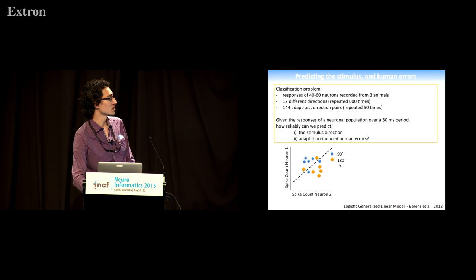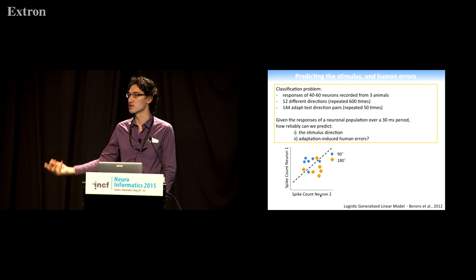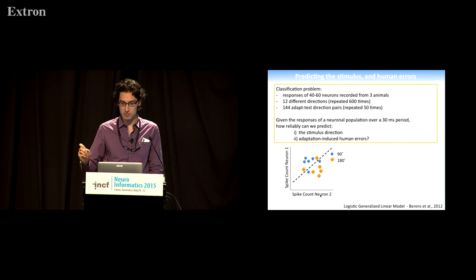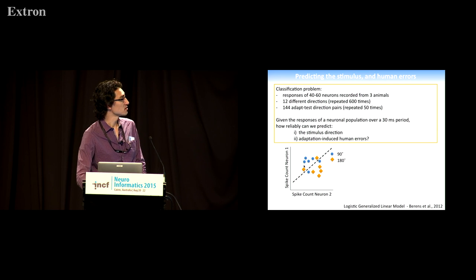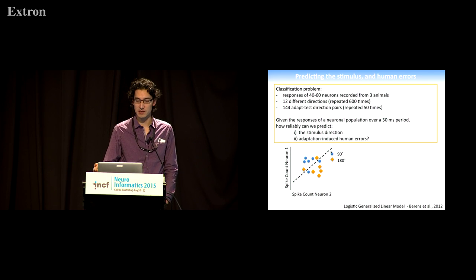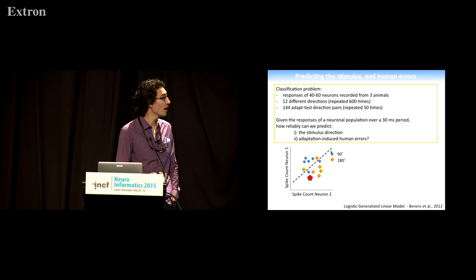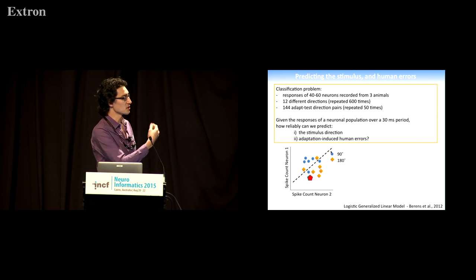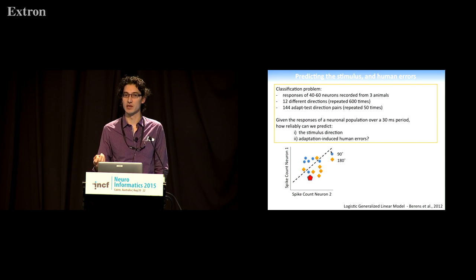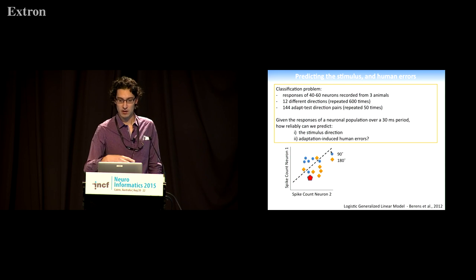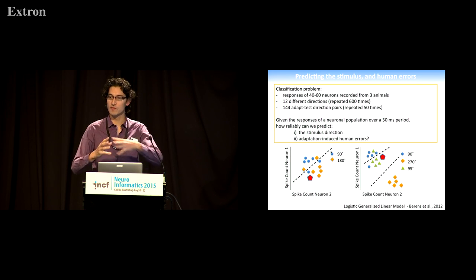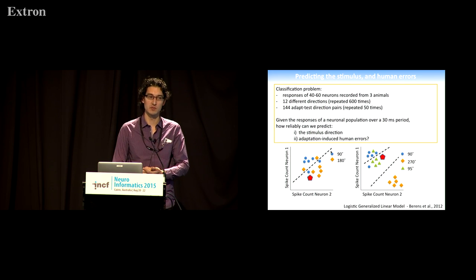The aim of all of these classification techniques is, given a training set of data—in this case blue representing responses to one stimulus, orange representing responses to another, and each data point here corresponds to the response of the population of neurons on a single trial—what we want to find is the best discrimination boundary that allows us to classify what stimulus was presented. We can use a training set and then a test set which was not involved in training the classifier, and so we can say, well, for this Pentagon, what stimulus was it most likely to be? We can do this given the responses of all of our neurons and for all of the different stimulus directions that we've used.